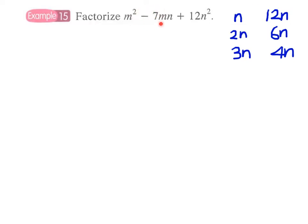Since we have minus seven in the middle term, only factors with a minus sign are able to make up the middle term of minus 7mn. We sum up the factors and see which pair can give minus seven. The first two pairs are not possible — only the last pair works, and therefore we can now write the factors.